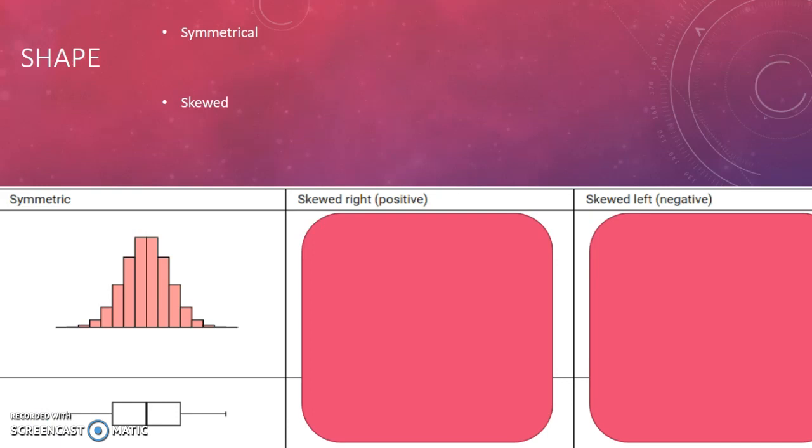When you look at symmetrical data, such as over here where we have a histogram and a box plot down the bottom, you can see that it's pretty evenly spread. If you were to draw a line straight down the middle, either there or there, it would look the same on either side. They'd look like a reflection of each other.